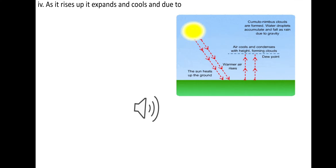As the air rises up, it expands and cools, and due to the release of pressure, condensation takes place, resulting in convectional rainfall.